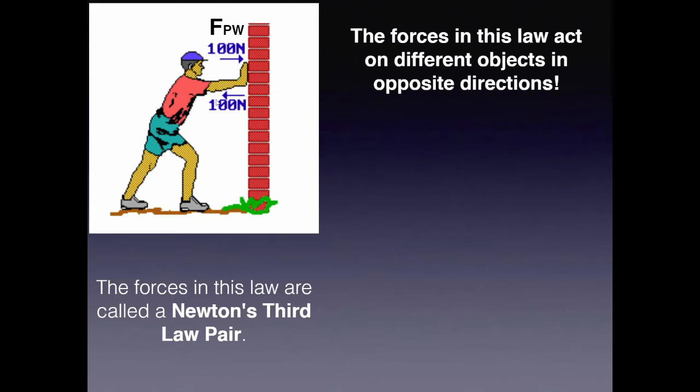What about this force that the wall exerts on the person? Yes, the person feels that at their hands. Well, that would be the force by the wall on the person. So F_WP. So this is an example of a Newton's third law pair. You can always tell it's a Newton's third law pair when the subscripts, the double subscripts, are switched as far as their order.